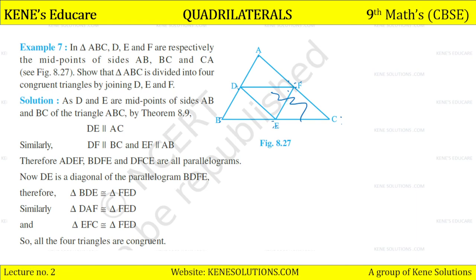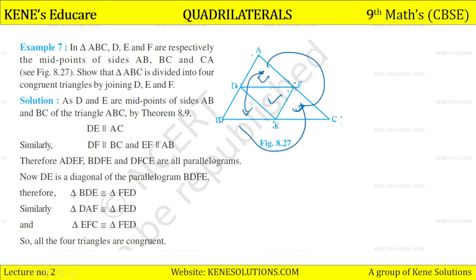EF is the diagonal of parallelogram BDFE. Therefore, triangle BDE is congruent with triangle FED. Similarly, triangle DAF is congruent with FED, and triangle EFC is congruent with FED. So all four triangles are congruent.